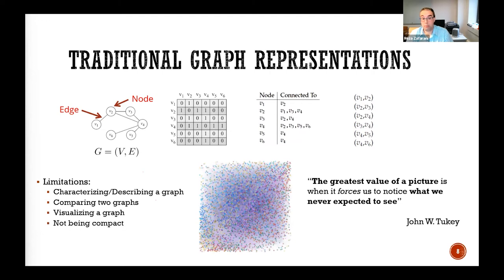There are other difficulties with these representations — they're not compact. If you have a lot of nodes, then the adjacency matrix becomes really, really large.